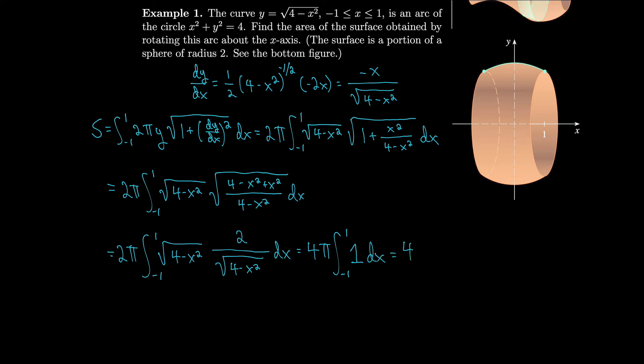So that's 4π times 2. The integral of a constant over an interval is just (b − a) times that constant, so we get 4π × 2 = 8π.